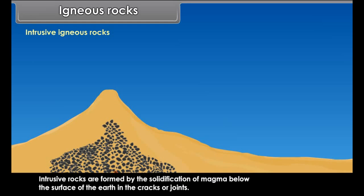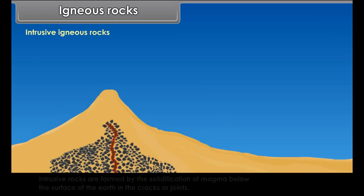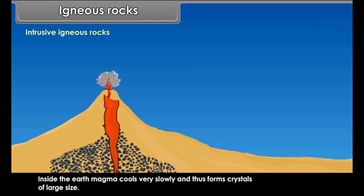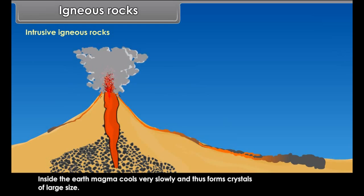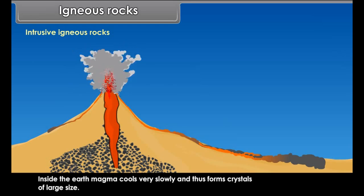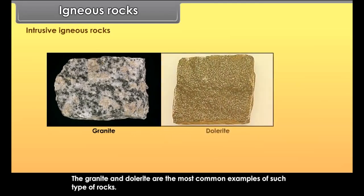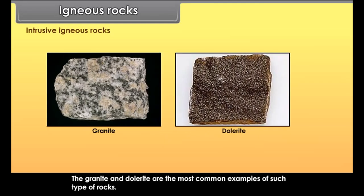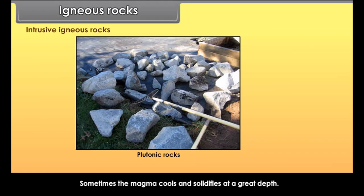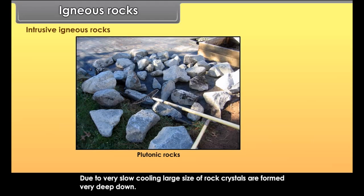Extrusive igneous rocks. During a volcanic eruption, the magma erupts and on reaching the Earth's surface, it cools and solidifies. Rocks formed due to solidification on the Earth's surface are known as extrusive igneous rocks or volcanic rocks. Basalt is a common example of such rocks.